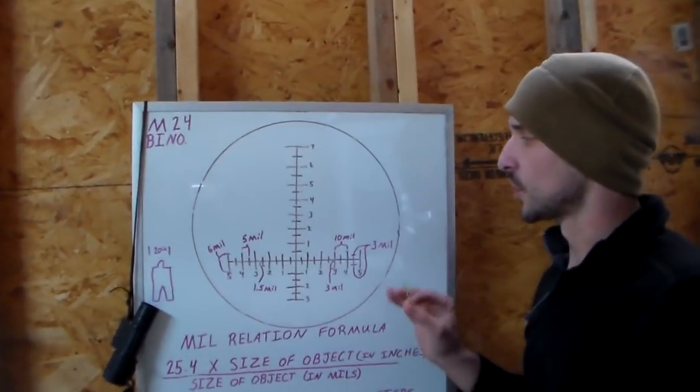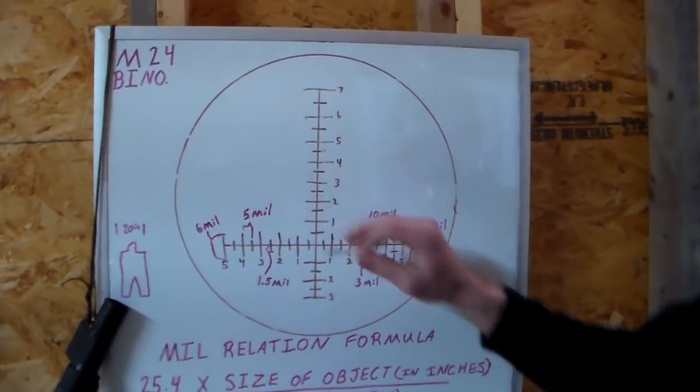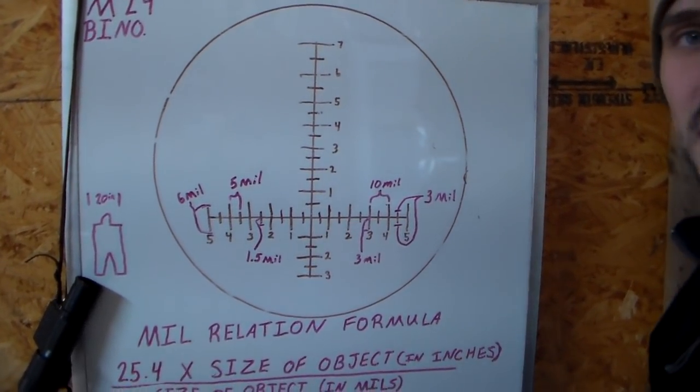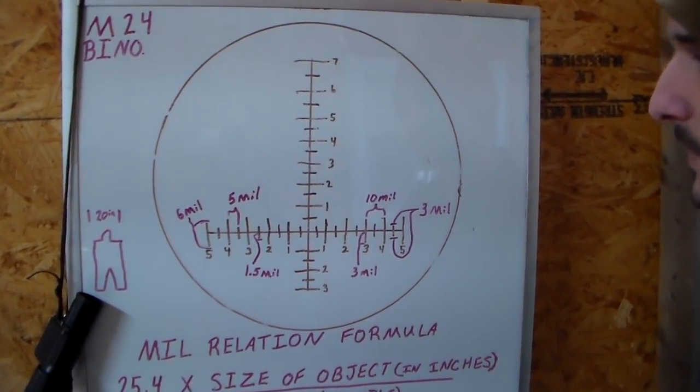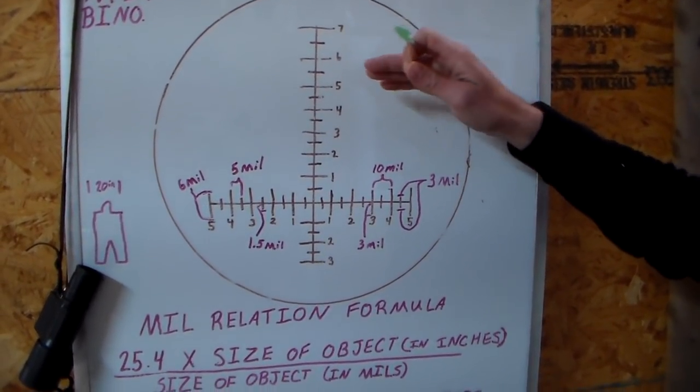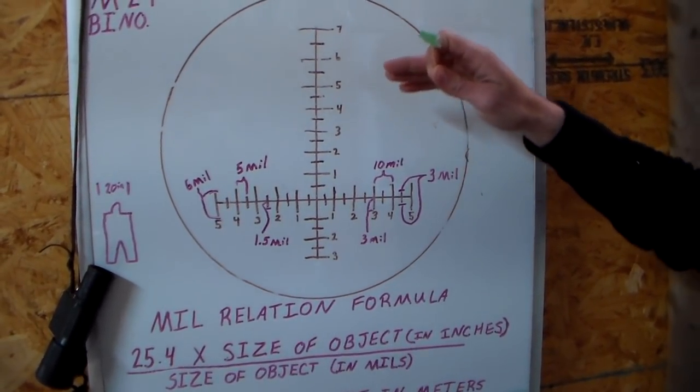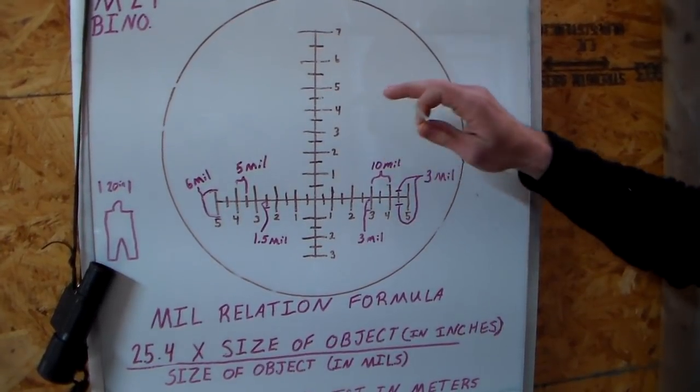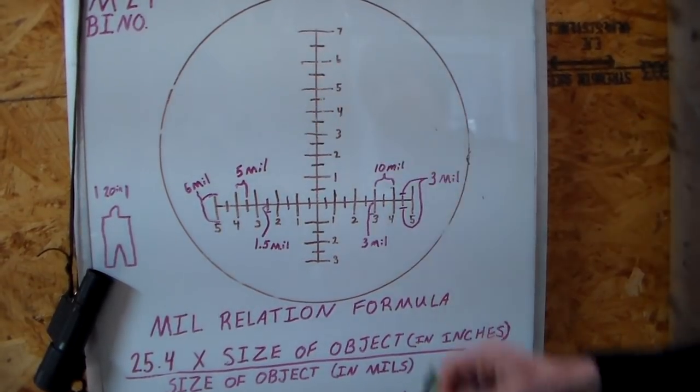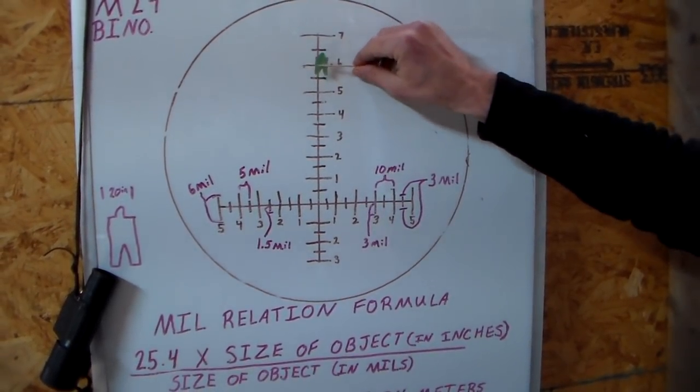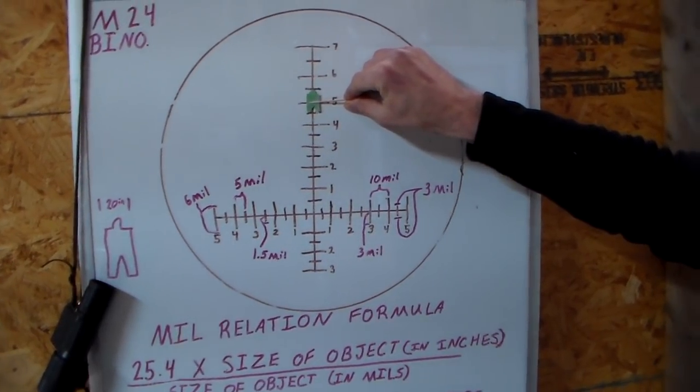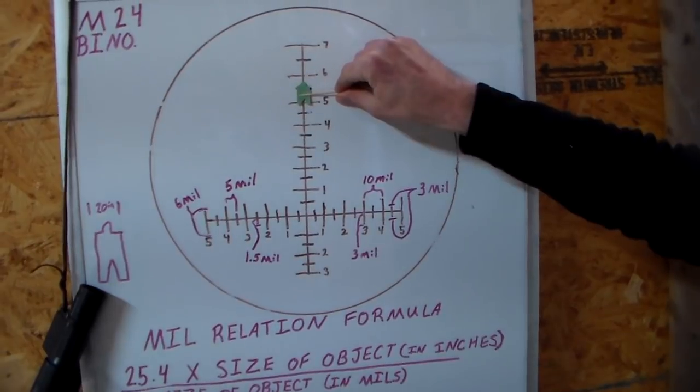So when we're milling a target, it does not matter where you mill it at on your reticle. You can mill it up here, you can mill it over here, down here. It does not matter where you mill it in this reticle. Every reticle is different and has different relations per tick mark. I know on this exact reticle here that these small hash marks are 3 mils wide. So I can mill it right here, and I'm going shoulder to shoulder. And it's 3 mils wide.